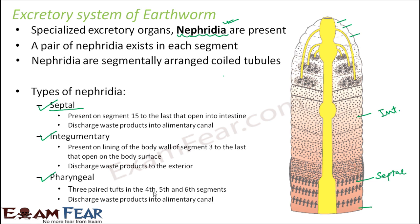Pharyngeal nephridia are 3 paired tufts present in the 4th, 5th, and 6th segments. You can see these three paired tufts present as a cluster — they are pharyngeal nephridia. The name pharyngeal comes from pharynx because they are located near the pharynx. They discharge their waste products into the alimentary canal. So pharyngeal nephridia and septal nephridia put waste products into the alimentary canal, whereas integumentary nephridia directly pass it to outside.